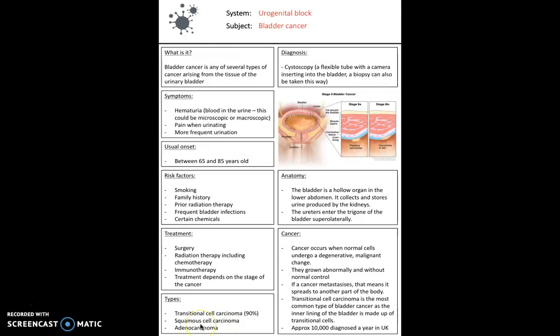In terms of treatment, surgery is probably the most likely route, however they will try chemotherapy first. Usually it becomes noticeable in patients between 65 and 85 years old. Symptoms are hematuria, pain when urinating, and more frequent urination.